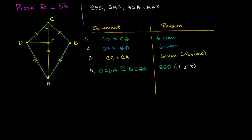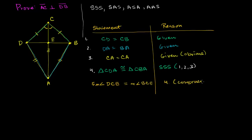For example, this angle is going to equal that angle. So statement 5: the measure of angle DCE equals the measure of angle BCE. This comes straight out of statement 4 — the congruency of those triangles — because they are corresponding angles, they have the exact same measure.